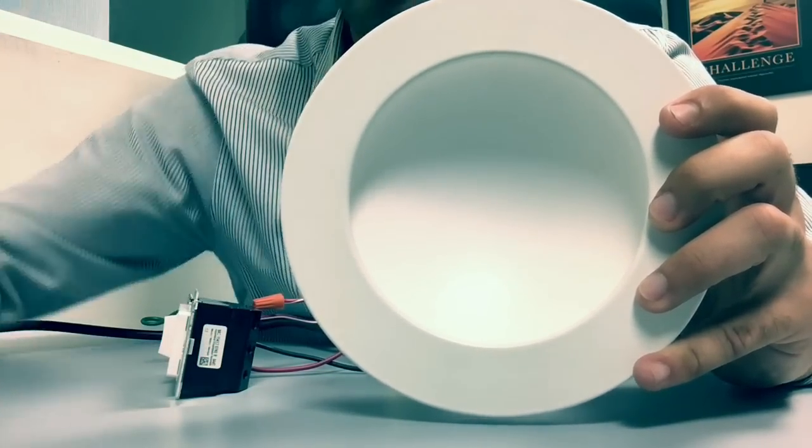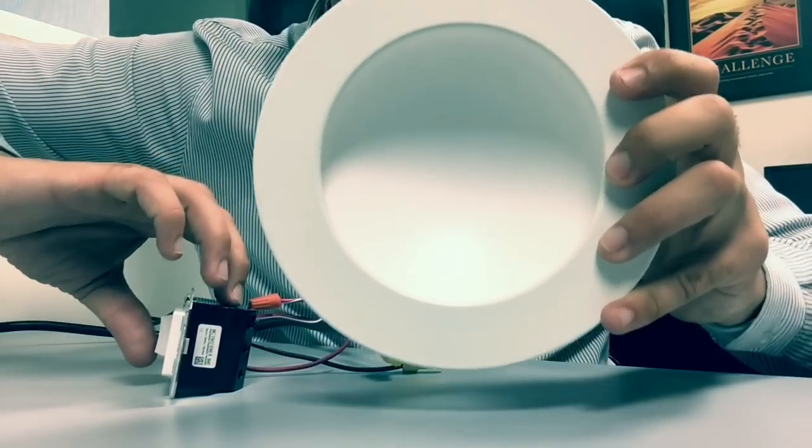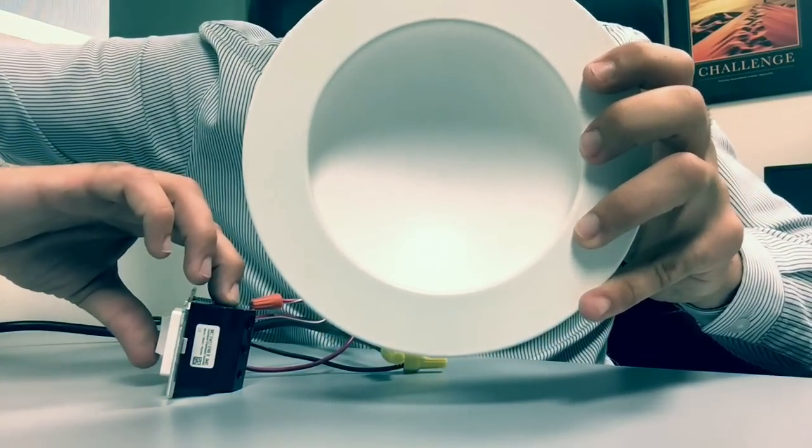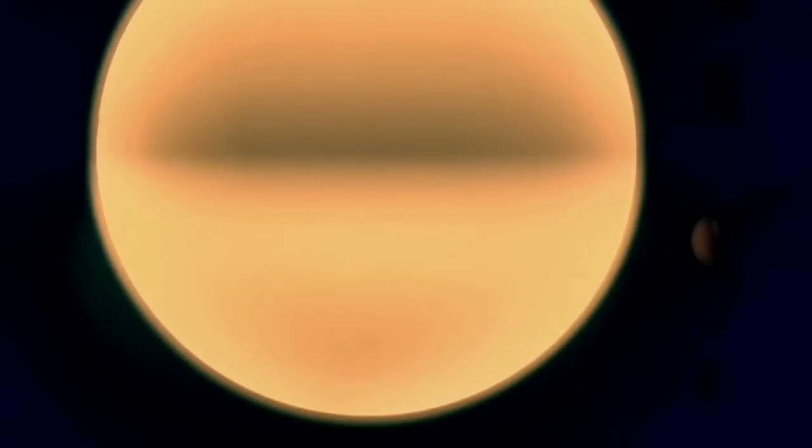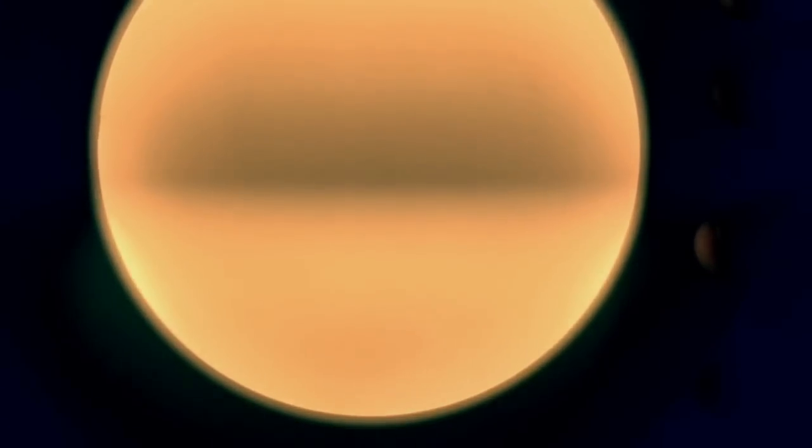Now I want to turn it on and give you an idea of what it looks like with that softness. From back here you can't really tell, but as I go closer you get that soft light. If I compare it to a regular downlight, you're still going to get a lot of brightness, a lot of direct hit of the light.